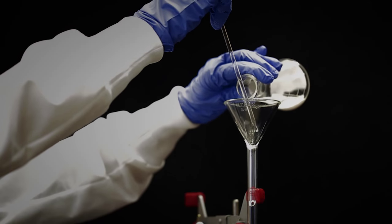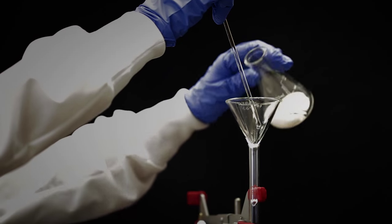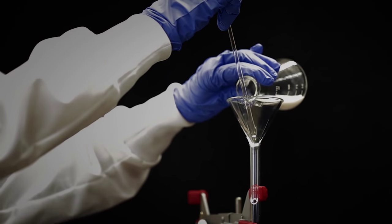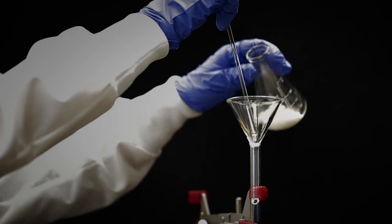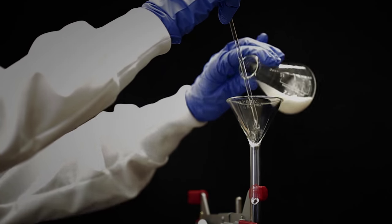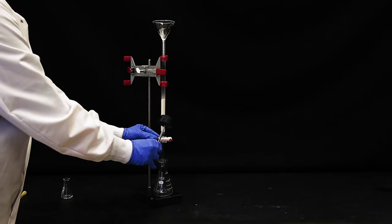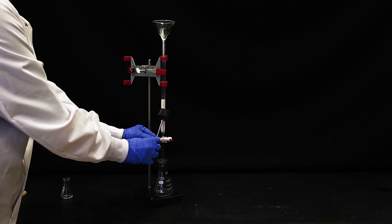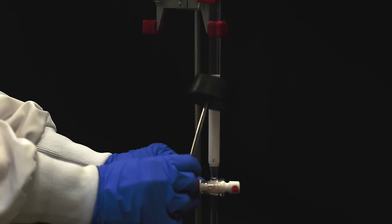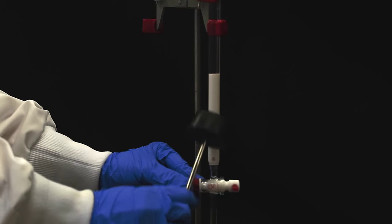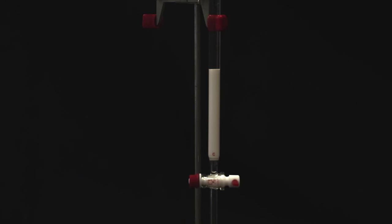Pour the slurry into the funnel at the top of the column. Continue swirling and pouring the slurry. Use a rubber stopper to tap the column to release air bubbles as the slurry is added. More hexane can be used to add the remaining alumina to the column.